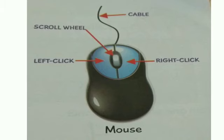Mouse Buttons. The mouse has two buttons and a scroll wheel. The left button is used for left click. The right button is used for right click. The scroll wheel is used to move the page up and down on the computer.